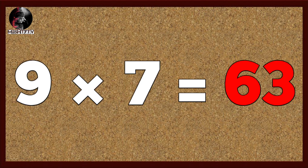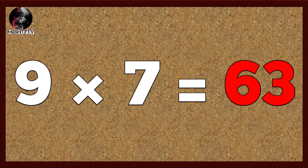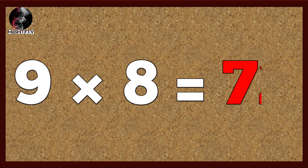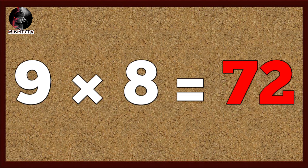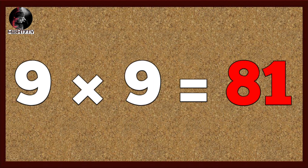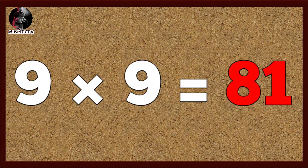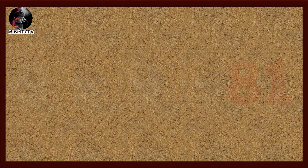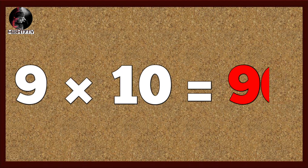Nine seven's are sixty-three, nine eight's are seventy-two, nine nine's are eighty-one, nine ten's are ninety.